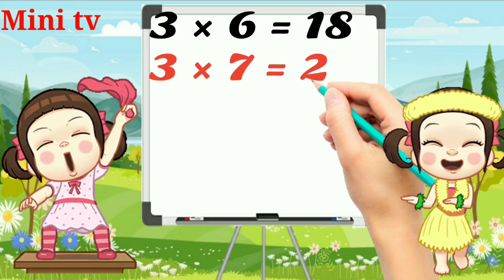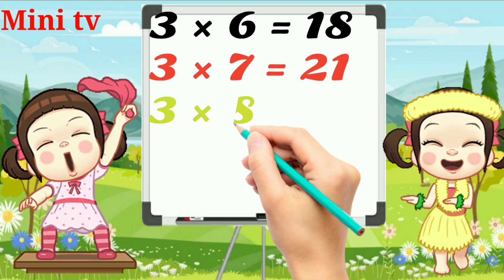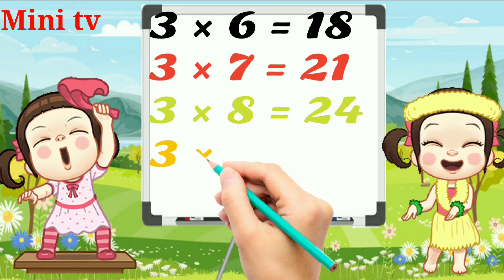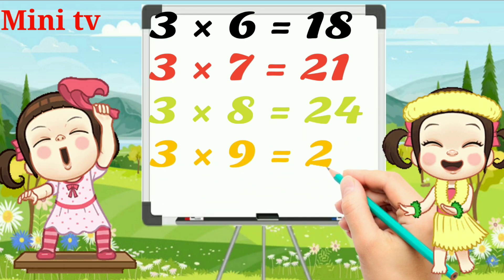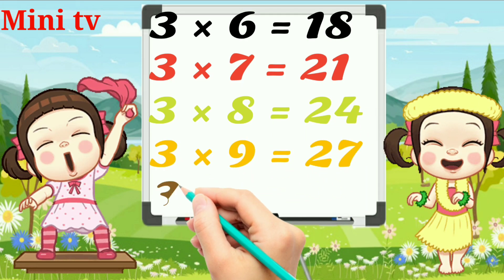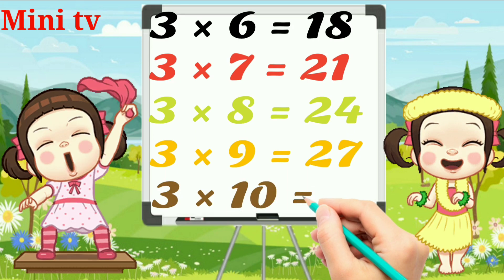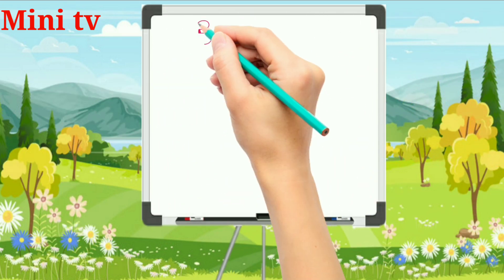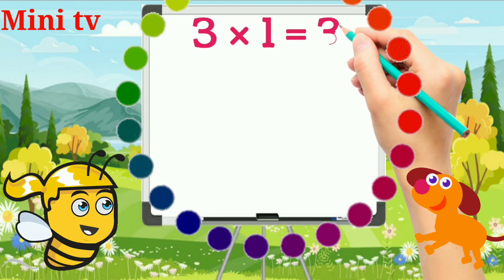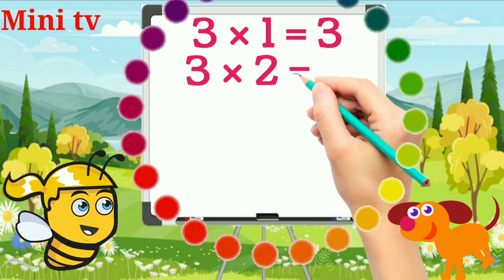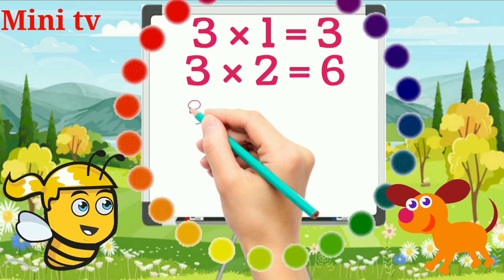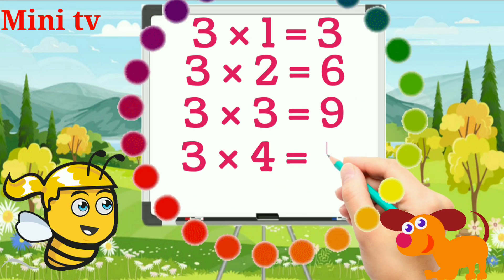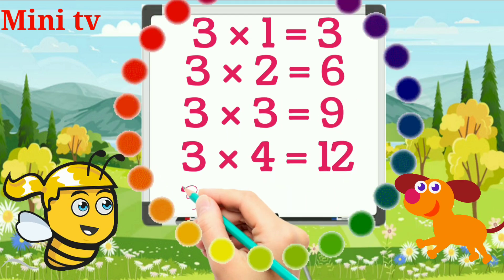3 times 7 is 21. 3 times 8 is 24. 3 times 9 is 27. 3 times 10 is 30. 3 ones are 3. 3 twos are 6. 3 threes are 9. 3 fours are 12.